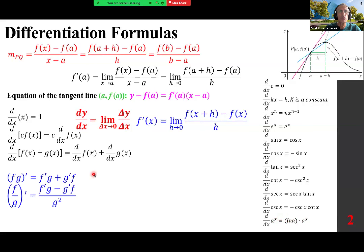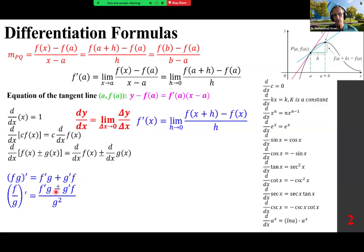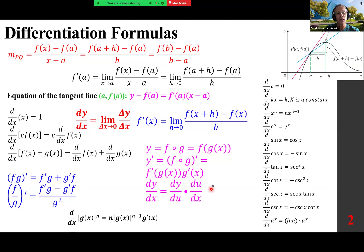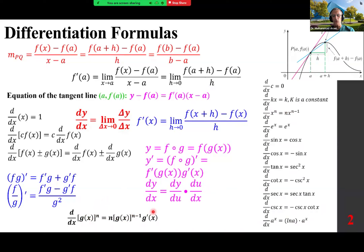According to the chain rule and logarithmic properties, the derivative of a^x is a^x times ln a. We use shorthand notation for the product rule and quotient rule. (fg)' is f'g plus g'f. (f/g)' uses the same thing with a negative in between: f'g minus g'f over g squared. For a composite function y = f(g(x)), y prime becomes f'(g(x)) times g'(x). Using Leibniz notation: dy/dx = dy/du times du/dx. The extended power rule: the derivative of [g(x)]^n is n[g(x)]^(n-1) times g'(x) by the chain rule.